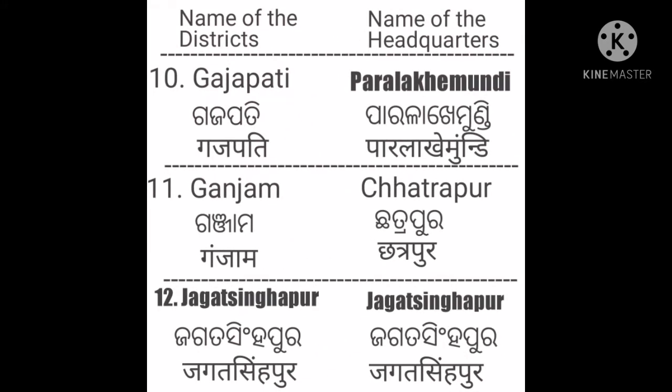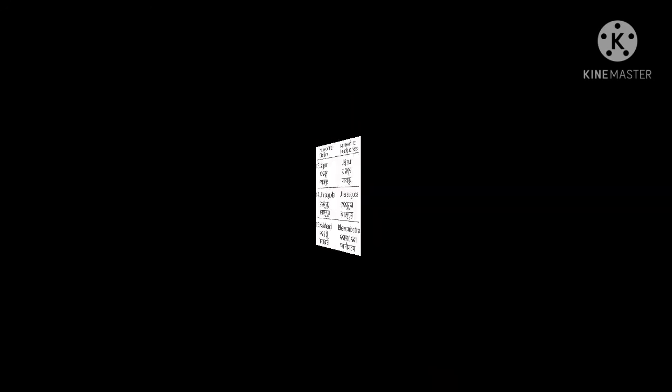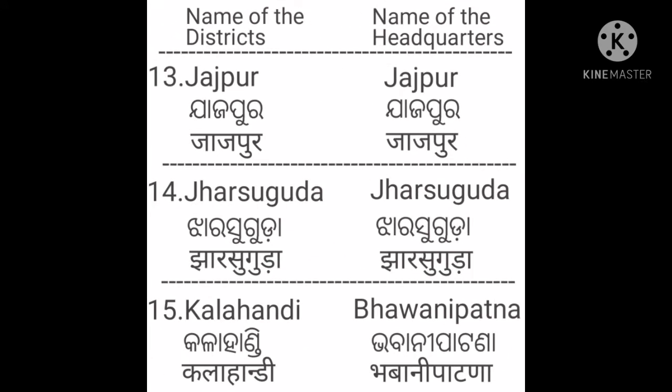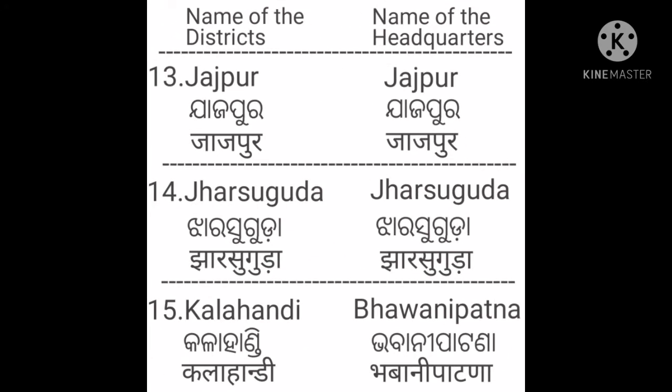Then number ten: Gajapati — Paralakhemundi. Kendrapara — Kendrapara. Ganjam — Chatrapur. Jagatsinghpur — Jagatsinghpur. Jajpur — Jajpur. Jharsuguda — Jharsuguda.